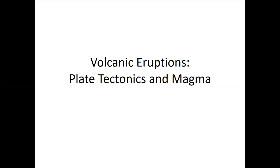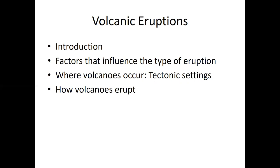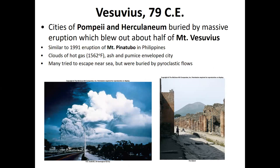We're going to see the mechanisms behind an eruption through the viewpoint of the composition of the magma involved, the volume of the magma, and the amount of dissolved gases — also known as volatiles — in the magma. We'll start with an introduction, then look at factors that influence eruption type, tectonic settings of volcanoes, and finally the mechanisms behind an eruption.